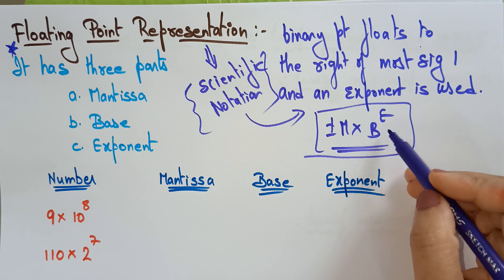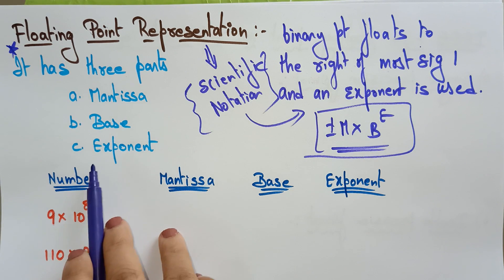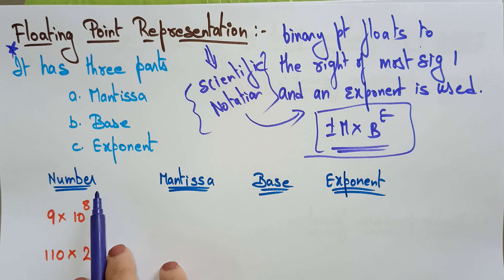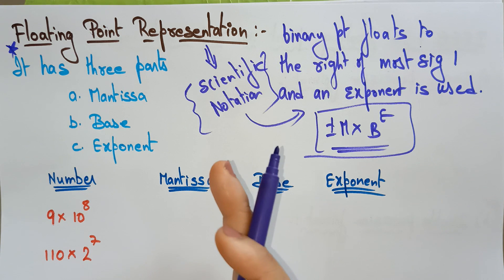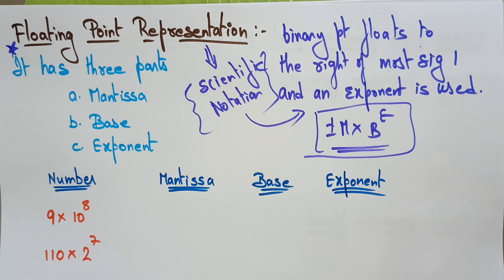So the mantissa, base, and exponent format. The floating point representation has three parts: mantissa, base, and exponent. Floating point numbers can be used to represent very small as well as very large numbers — that's why we follow floating point representation rather than fixed point. It has three parts: the mantissa, base, and exponent.